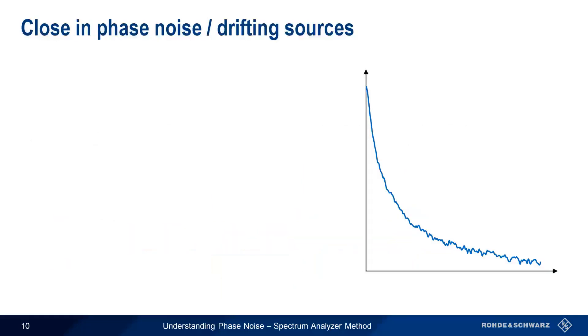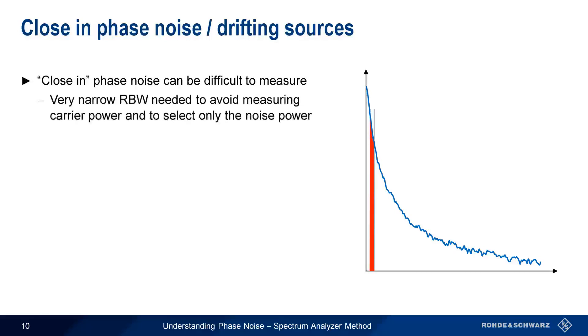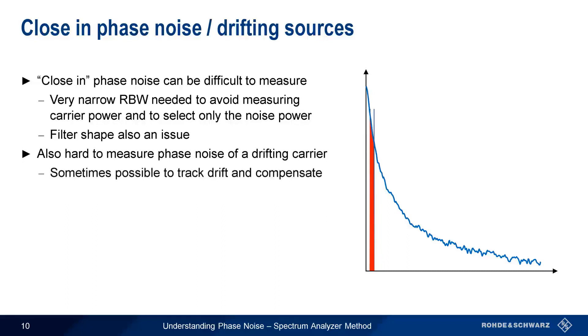Measuring phase noise at very small offsets from the carrier, or close-in phase noise, can be very difficult for two reasons. First, a very narrow resolution bandwidth filter needs to be chosen to avoid measuring the carrier power as well as the noise power. The fact that resolution bandwidth filters have a Gaussian rather than a perfectly rectangular shape also complicates this issue. An additional challenge is measuring the phase noise of a carrier that drifts slightly in frequency, although some analyzers do have the ability to track a small amount of drift and automatically compensate for it.